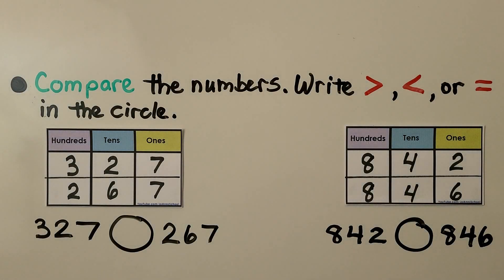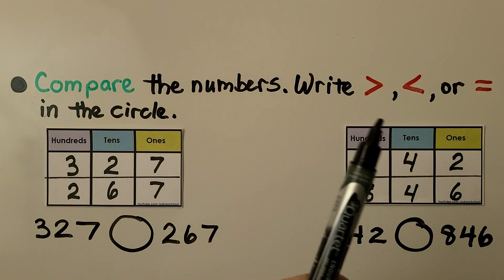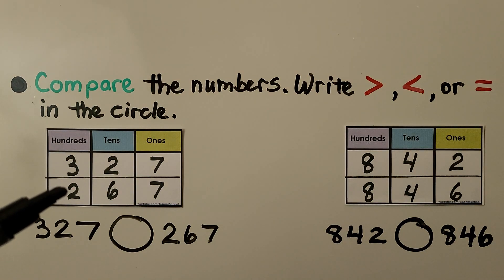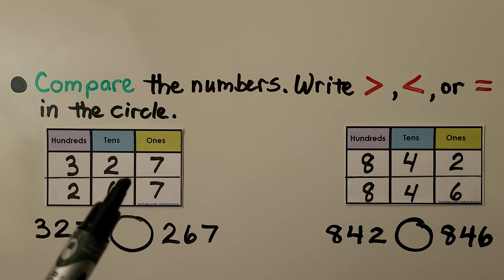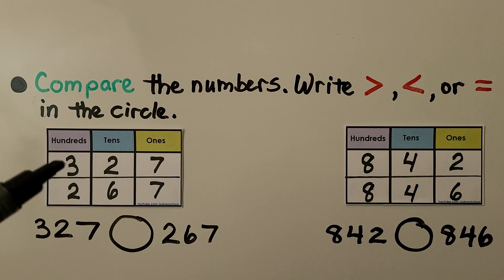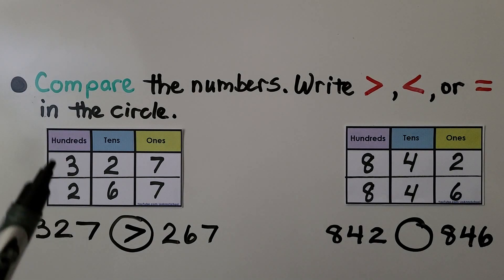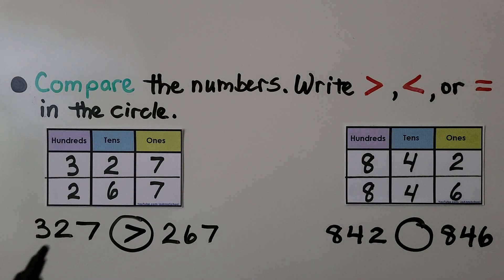Here we need to compare the numbers and write the symbols — greater than, less than, or equal to — in the circle. We have them stacked on top of each other to compare place values easily. We can see three hundreds is greater than two hundreds. We don't need to compare the other digits. By starting with the greatest place value, we can see right away that 327 is greater than 267.